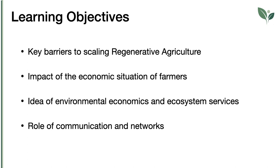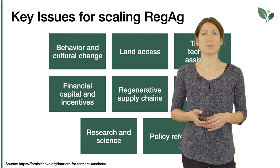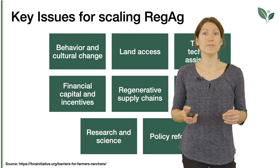First, the key barriers to scaling regenerative agriculture. Second, the impact of the economic situation of farmers and change. Third, environmental economics and ecosystem services that support regenerative outcomes. Last but not least, the role of communication and networks for transitioning.